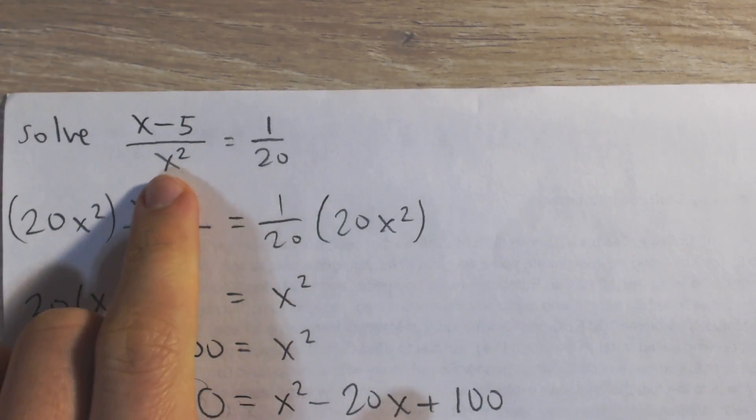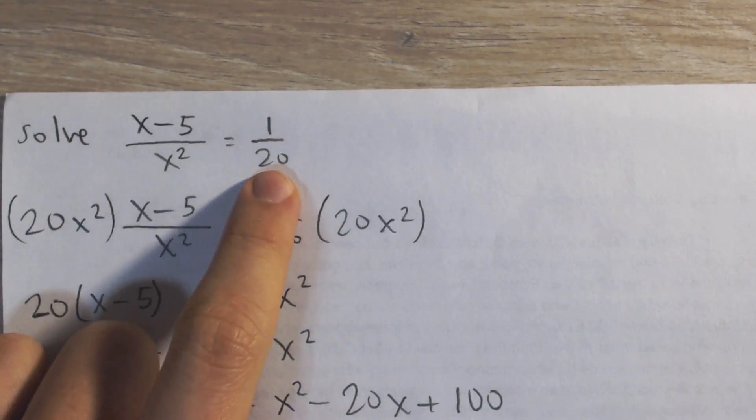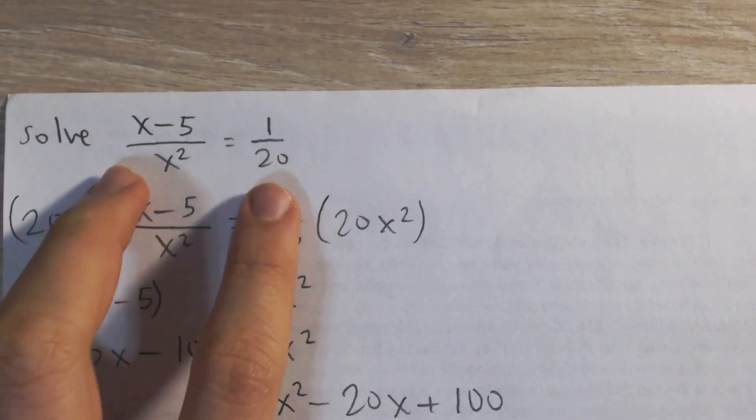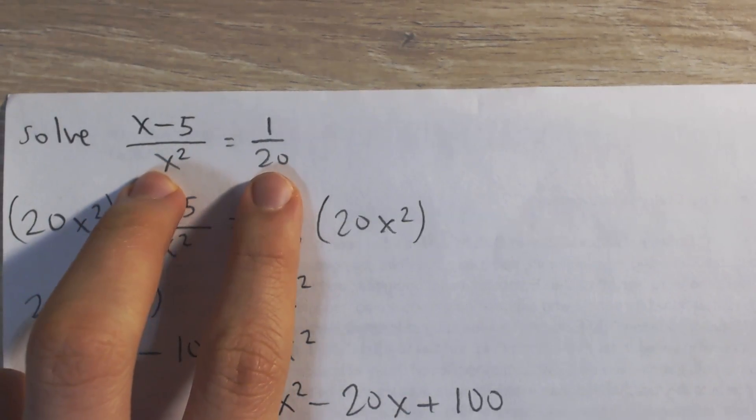Okay, so here I have an equation x minus 5 divided by x squared is equal to 1 over 20, and here I'm trying to solve it. So I notice I have denominators here, so I want to get rid of those.